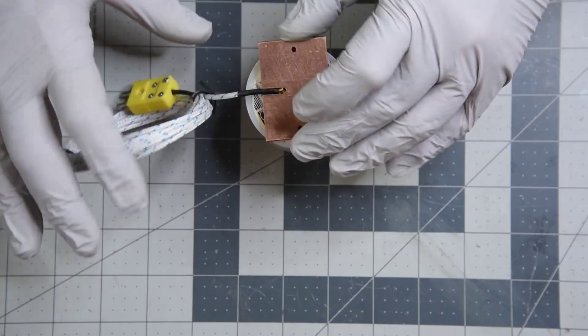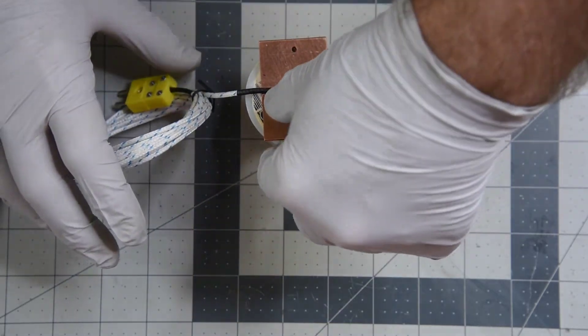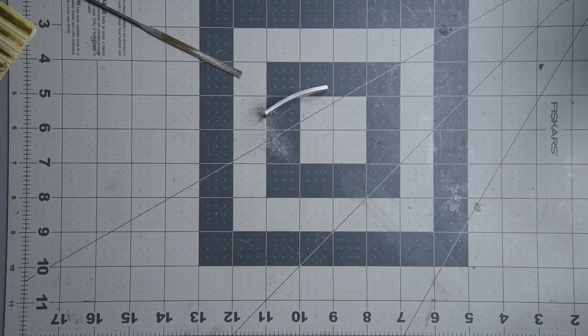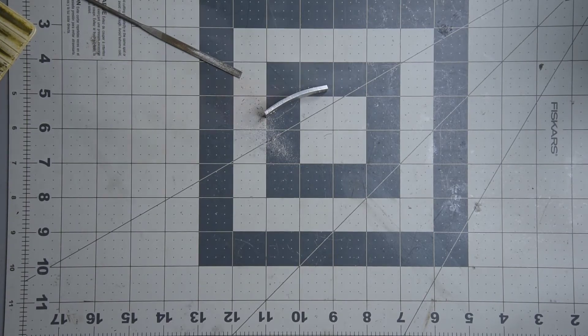That should make a good mounting surface for a TO247 case. And with a bit of spring to the thermocouple bead, it should make good thermal contact.